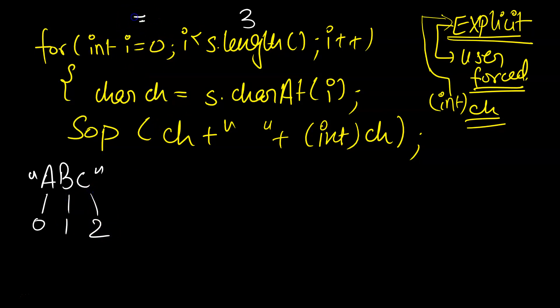First, the value of i will be 0. It will extract s.charAt(i), meaning go and extract the character at 0 position from the string s. My string s is ABC, so I will go and extract the character at 0 position, which is A. A will be stored in ch. In System.out.println, we will print A and then int ch. What is the ASCII value of A? We know it is 65.